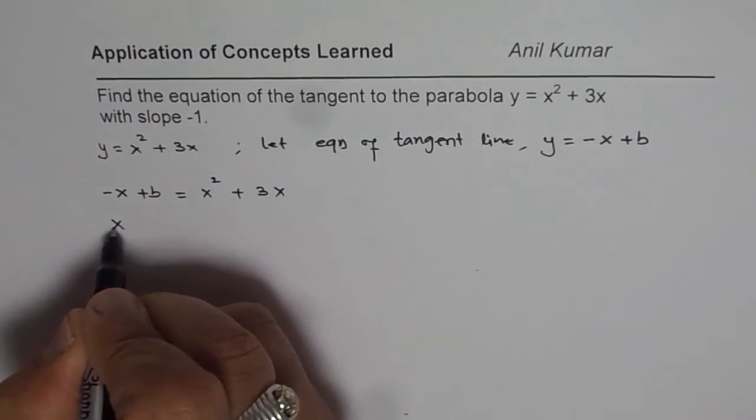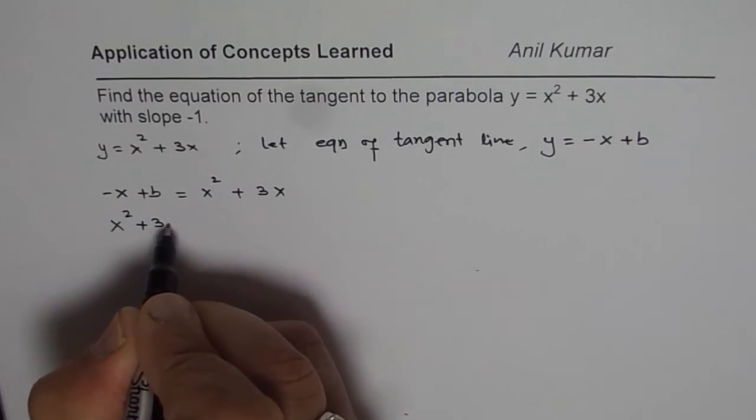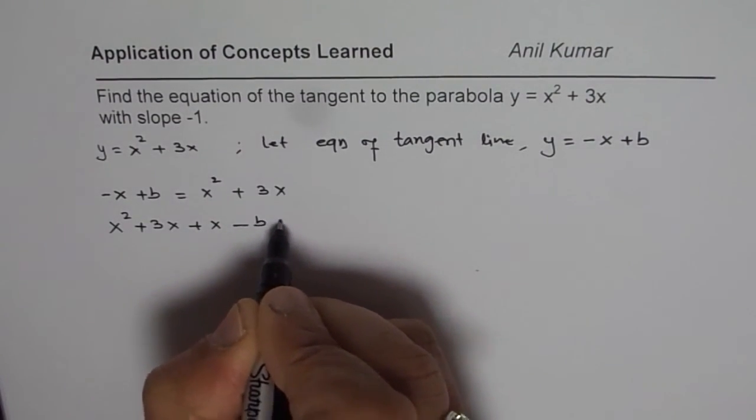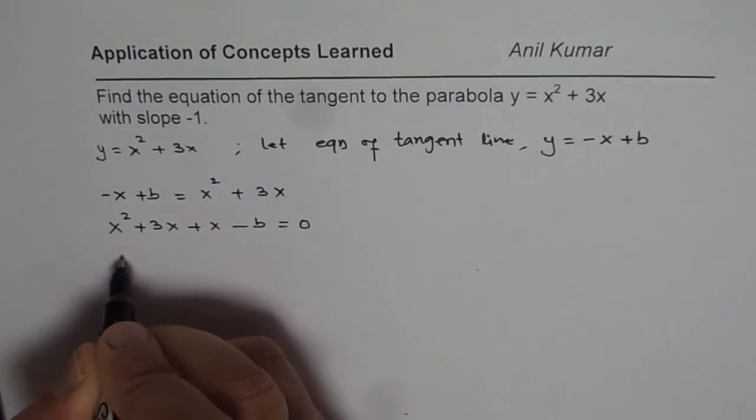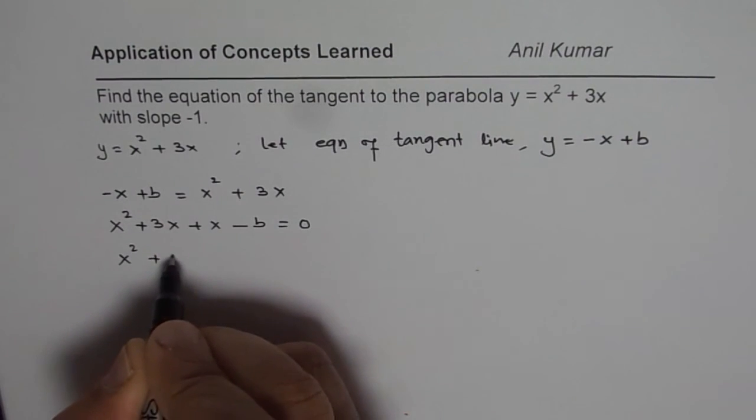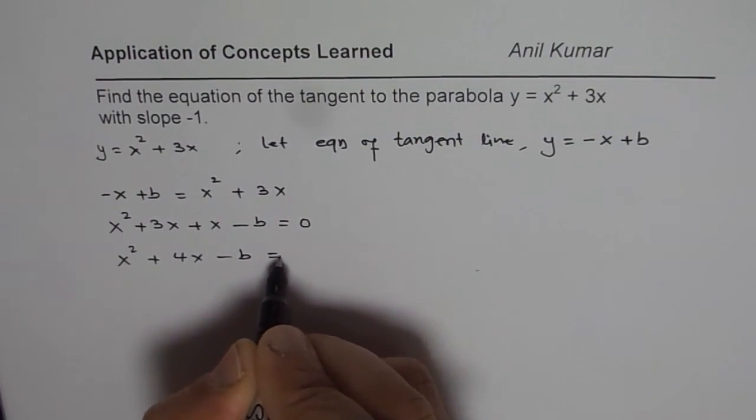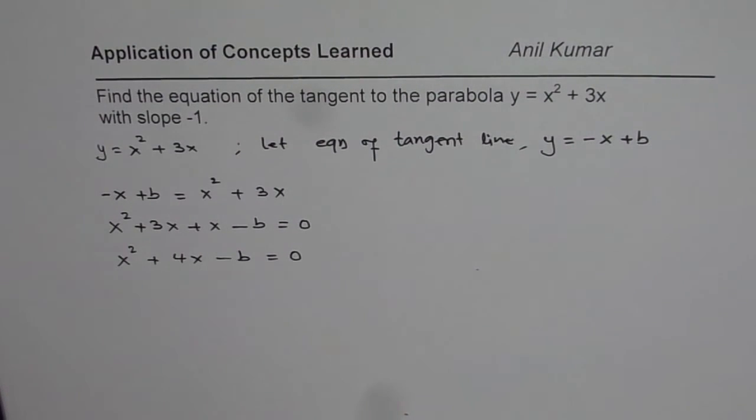Bring the terms together, we get x square plus 3x plus x minus b equals to 0, which is x square plus 4x minus b equals to 0, right?